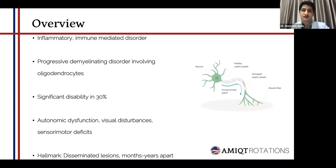Other features also include autonomic dysfunction, visual disturbances, as well as sensory motor deficits, which are very commonly seen as numbness, tingling, or paresthesias. One of the hallmark features of multiple sclerosis is the lesions which are disseminated in space and time, meaning the lesions are usually months to years apart from each other.